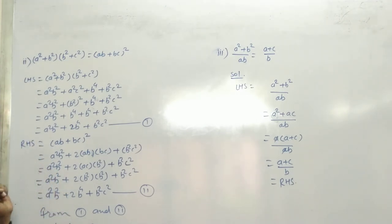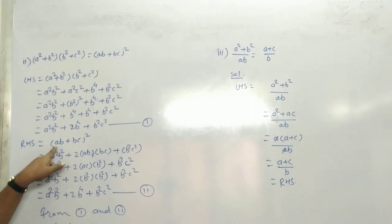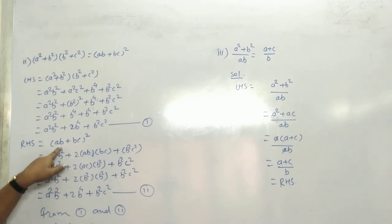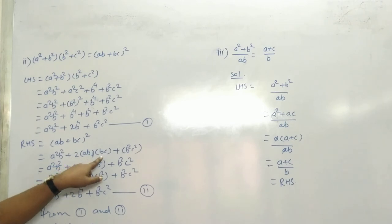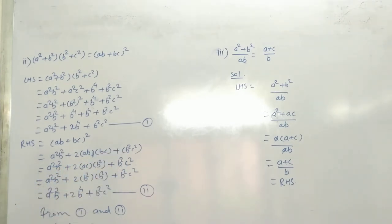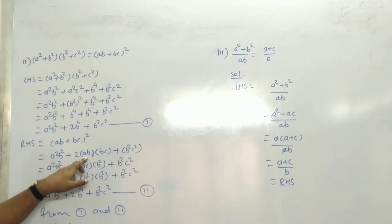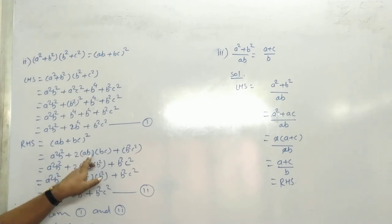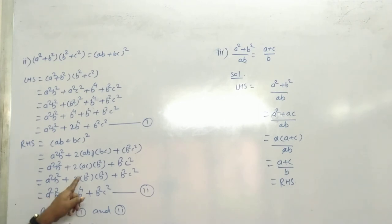1 and 1 को add करने पर: A square B square plus 2 times B raise to 4 plus B square C square — यह one part हुआ। Second part: RHS solve करते हैं। (AB + BC) whole square। Formula: (a + b) square = a square + 2ab + b square। तो A square B square plus 2 times AB into BC plus B square C square।